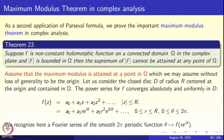The theorem states: suppose f is a non-constant holomorphic function on a connected domain Ω in the complex plane, and |f| is bounded in Ω; then the supremum of |f| cannot be attained at any point of Ω. We prove this by contradiction — assume the contrary, that the maximum modulus is attained at some point in Ω.